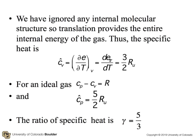Now, we've ignored any internal molecular structure, so translation provides the entire internal energy of the gas. Therefore, the specific heat is equal to the partial of E with T, and that turns out to be 3 halves times the universal gas constant in molar units. For an ideal gas, C sub P minus C sub V is R, and C sub P is 5 halves times the gas constant. So the ratio of specific heat is gamma is 5 thirds.